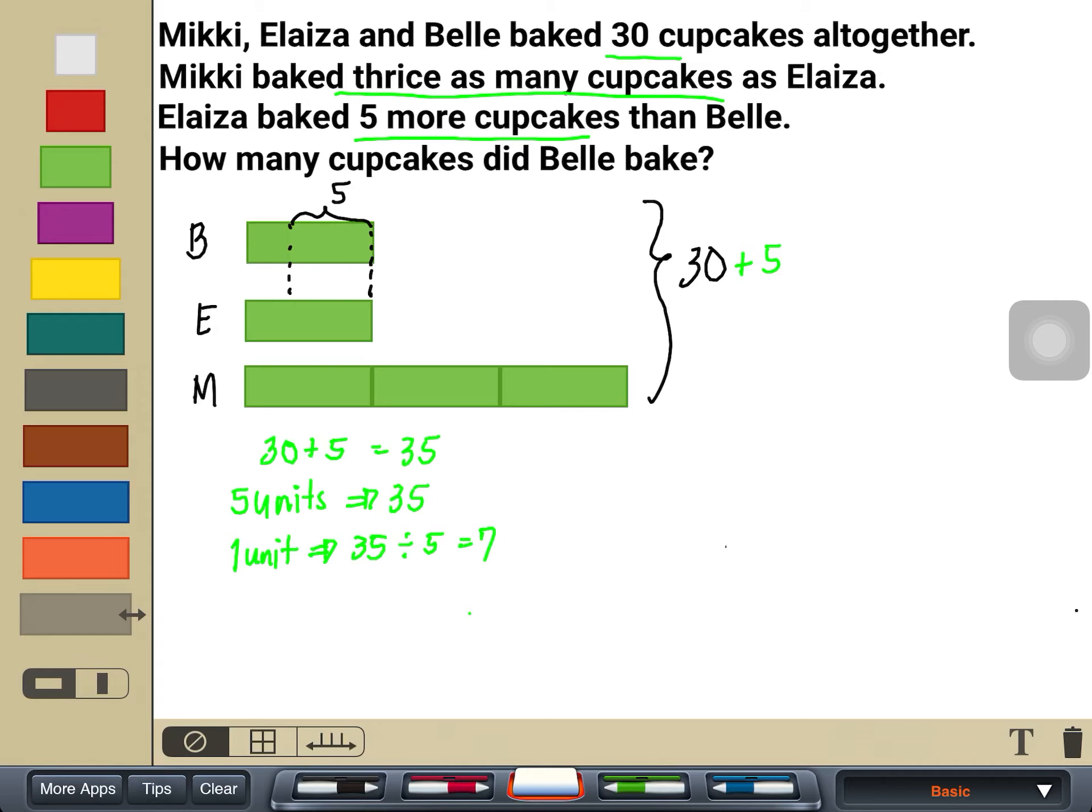Now let's go back to our problem. If each green bar is 7, that means Eliza has 7, right? And each one here for Mickey is also 7. But Belle, going back to our original problem, has 5 less than Eliza. So let me just remove this again. Removing that again so that we can see how much Belle has originally.